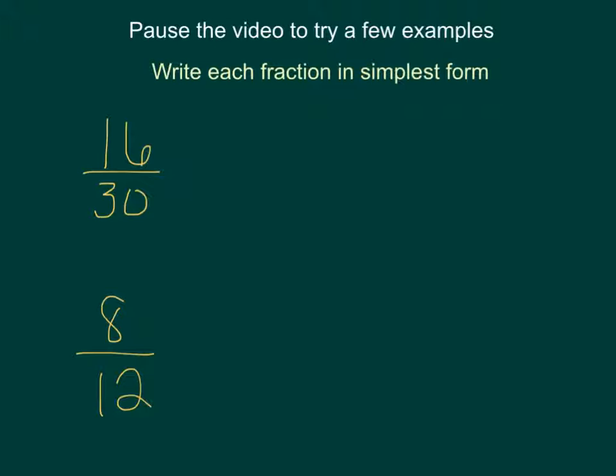Pause the video to try a few examples. Write each fraction in simplest form. The simplest form of 16 over 30, you could divide both of these by 2 and get 8 over 15. And that would be your simplest form.